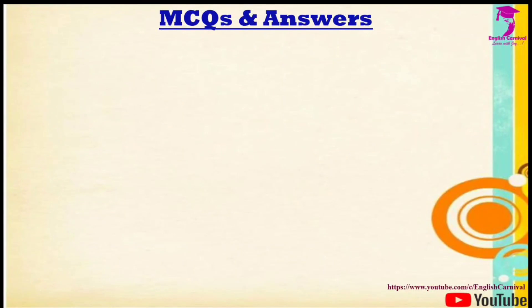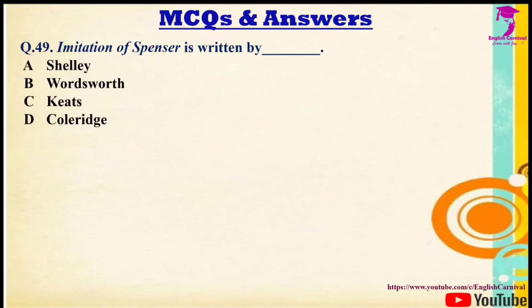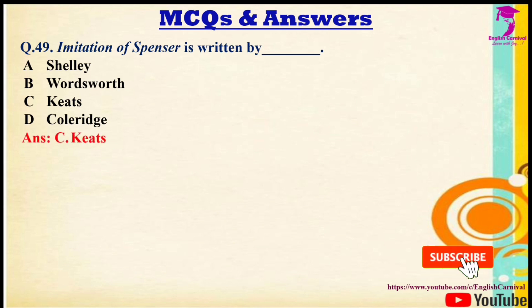Question 49: Imitation of Spenser is written by — Options: A) Shelley, B) Wordsworth, C) Keats, D) Coleridge. The correct answer is C — Keats.